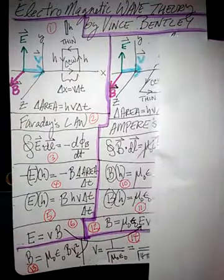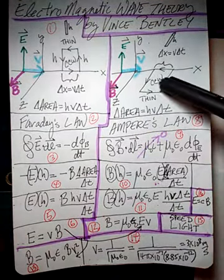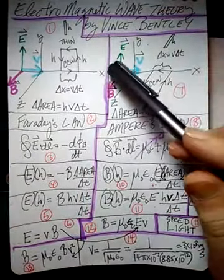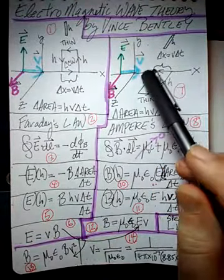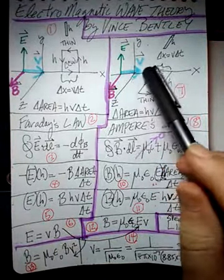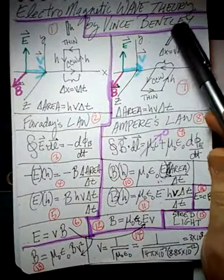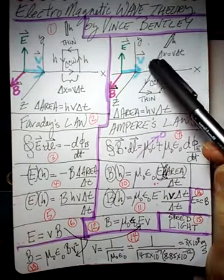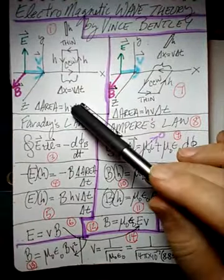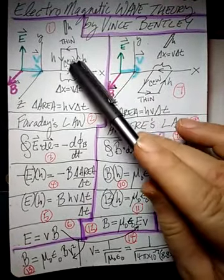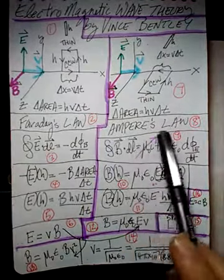Now let's look at a different loop — the exact same wave but acting on a loop oriented in a different plane. This loop is also thin in the x-direction with the same delta x = v·delta t, so the area is the same: H·v·delta t. Here we're going to use Ampere's Law.